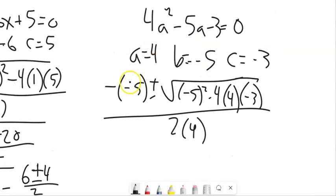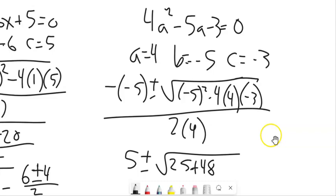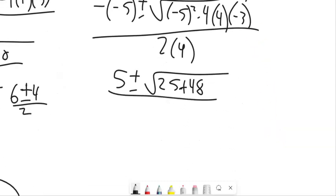Negative B. So negative, negative 5 plus or minus the square root of B squared minus 4 times A times C all over 2 times A. Negative, negative 5 is 5. Negative 5 squared is 25. Negative times a negative is going to be positive. So this will be plus. And let's see, 12 times 4 is 48. So plus 48. And then 2 times 4 is 8.